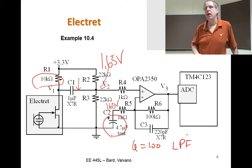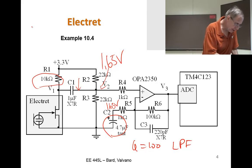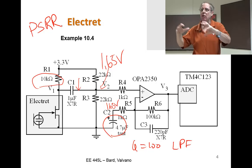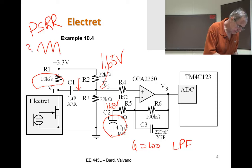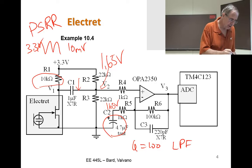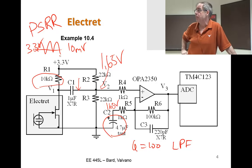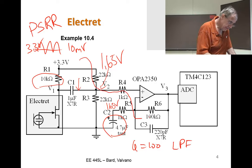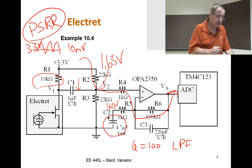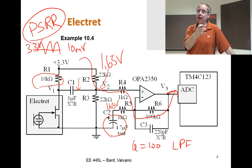What is the power supply rejection ratio of this circuit? That's a parameter which is a measure of the ratio of power line noise. If I have a 10 millivolt ripple on my 3.3 line, how much of that 10 millivolts is showing up in my output? Turns out all of it. Power line ripple is going to come right through here. So this is a bad circuit for power supply rejection ratio.